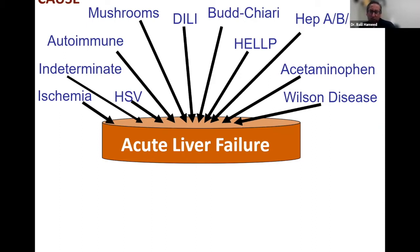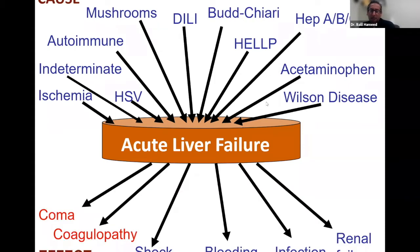Once you develop acute liver failure, it doesn't matter what the cause is — there are many complications. We already talked about hepatic encephalopathy and coagulopathy. But these patients will be among the sickest in the ICU — they can have shock, risk of bleeding, risk of infection, and renal failure. It's important to identify them and we'll go over the workup and testing recommended for these patients.